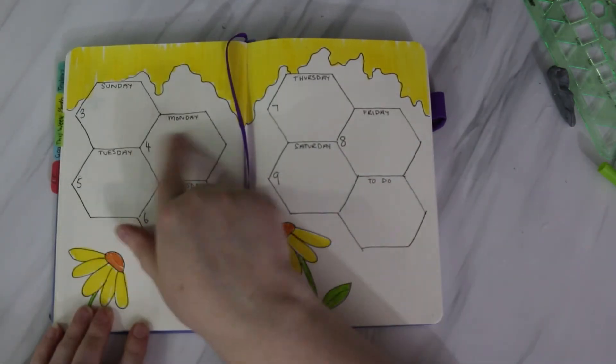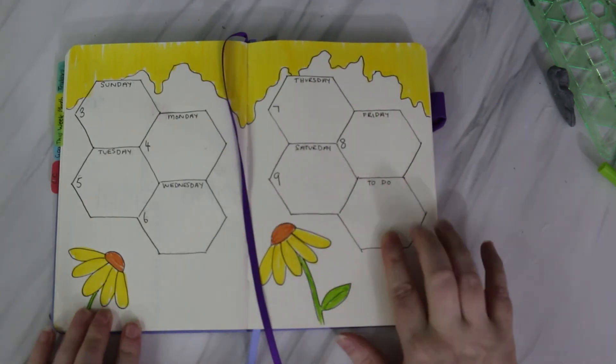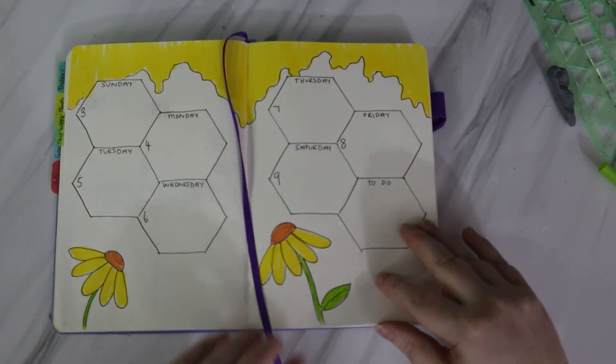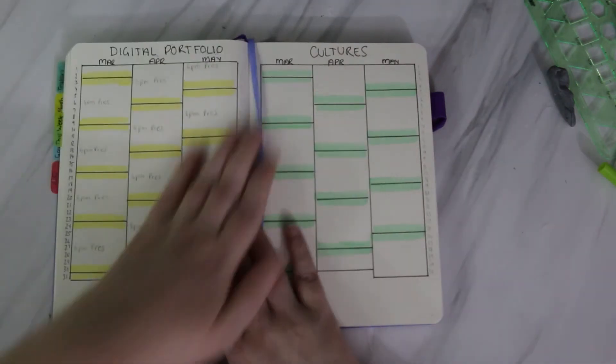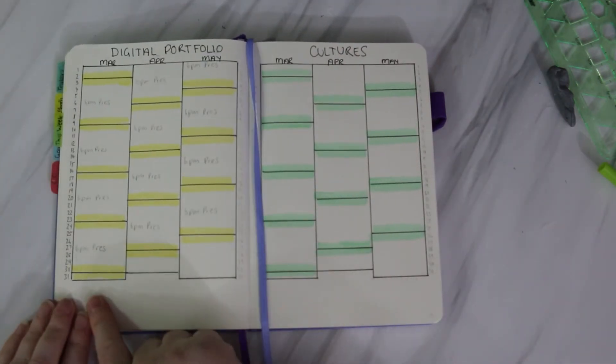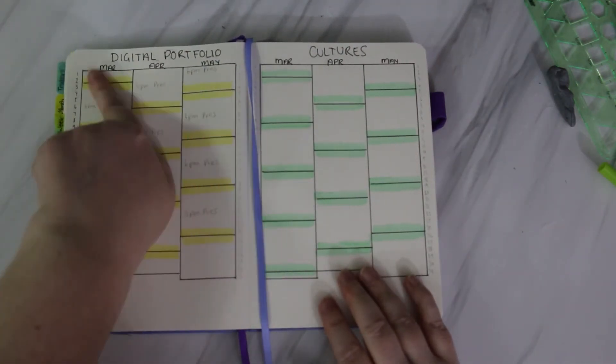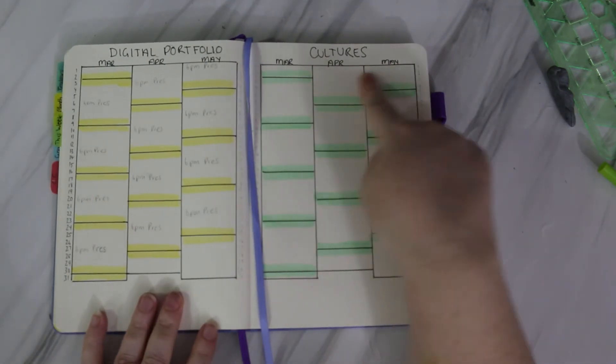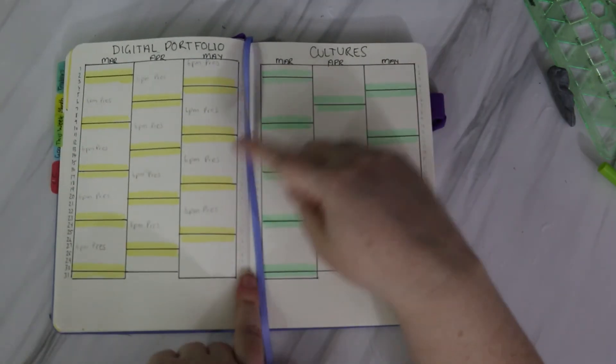Then we have the next week with some flowers, and I may put some of those bees in down the bottom as well. And then we have my calendex spread for the next three months for my study period for my two units this study period.